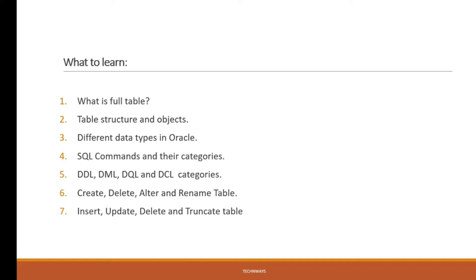So what we are going to learn in this video: firstly we will be looking at tables. In the earlier video we already discussed how the 3-tier architecture is working with Oracle databases, how databases are working and interacting with web APIs, and how we are handling the database. If you did not see that video, please go watch the first video. So in this video we will be learning about table structures and different data types we use inside Oracle databases, and SQL commands and their categories - DDL commands, DML commands, DQL commands, and DCL commands.